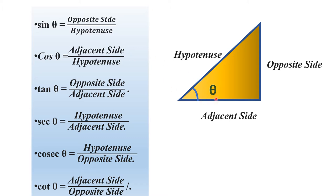The basic trig ratios: sin is opposite over hypotenuse, cos is adjacent over hypotenuse, and tan is opposite over adjacent.